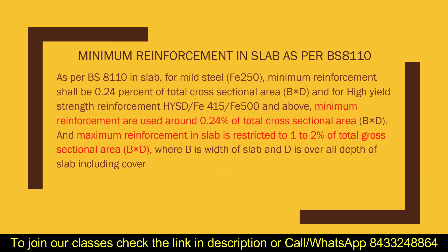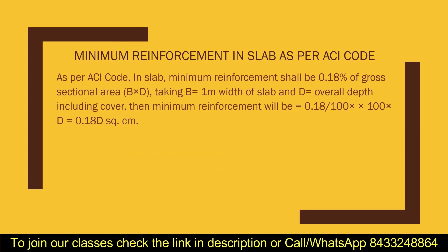Now let's see what other codes say. According to BS-8110, the minimum reinforcement in a slab should be 0.24 percent of the total cross-sectional area. However, when it comes to maximum reinforcement, it is again 1 to 2 percent of the total cross-sectional area.